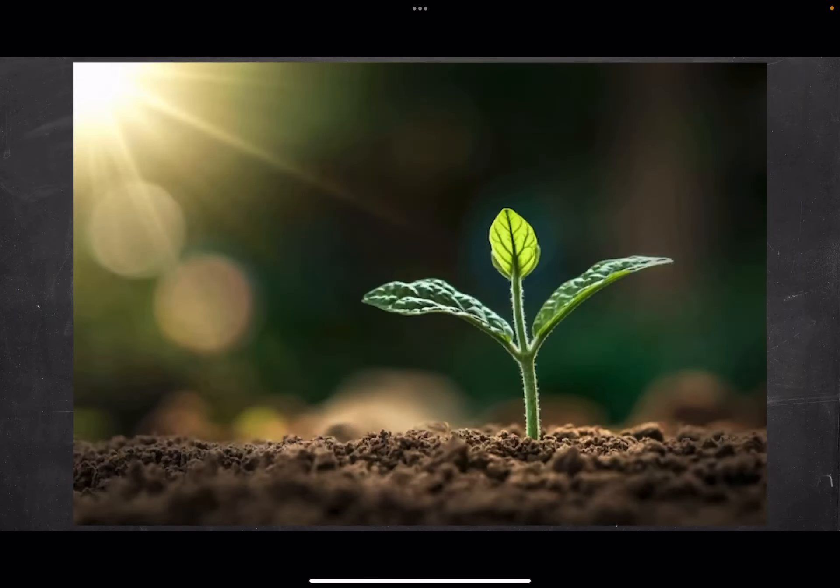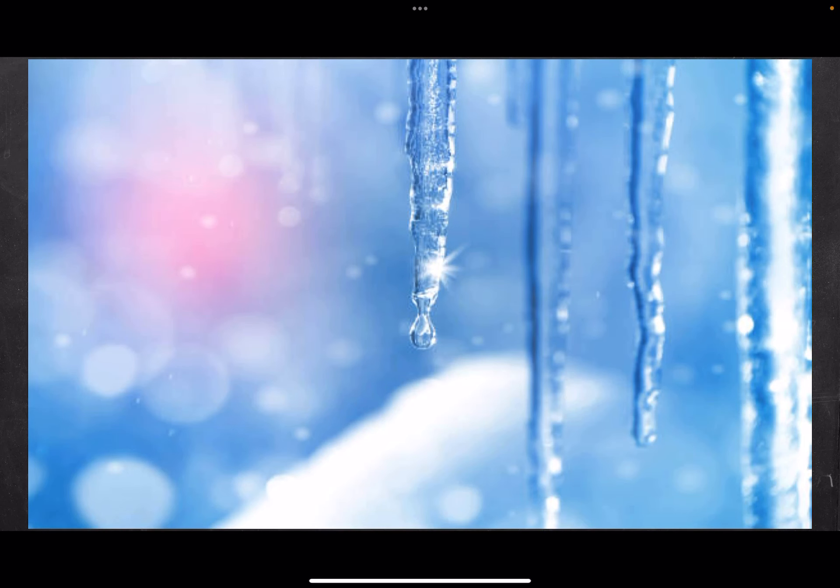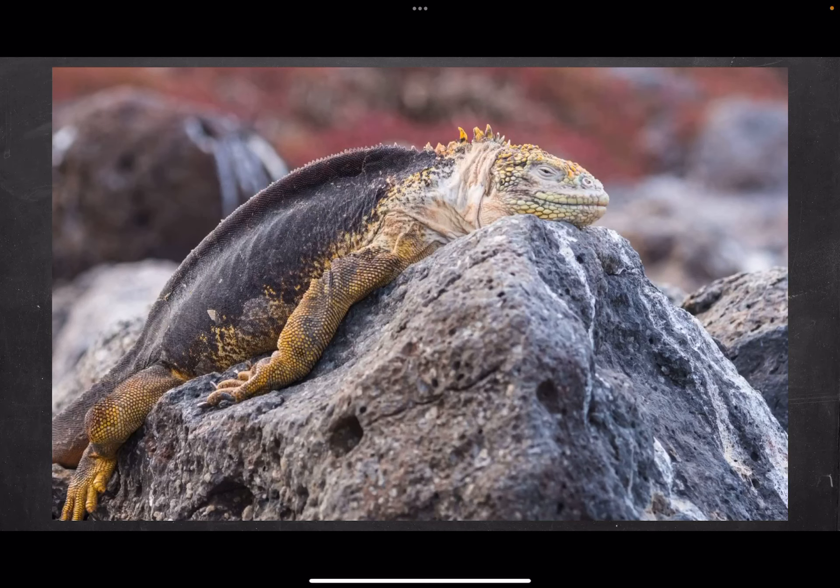Its light nourishes plants and other producers or autotrophs. Its heat melts the ice and keeps the planet warm. Its heat also provides warmth for all living things, not just animals but plants, fungi, and even bacteria.